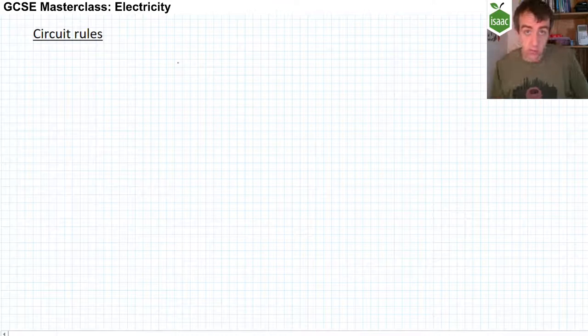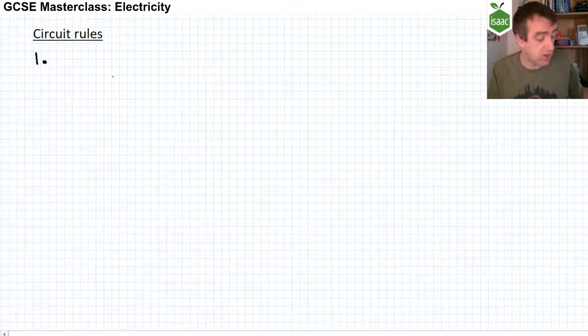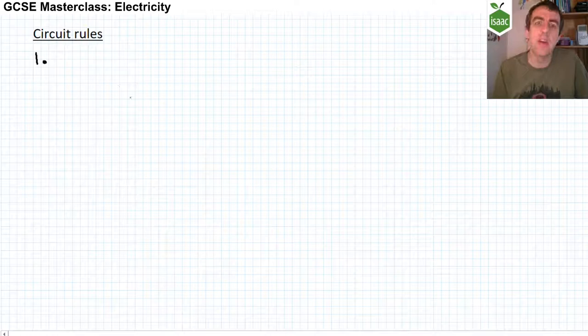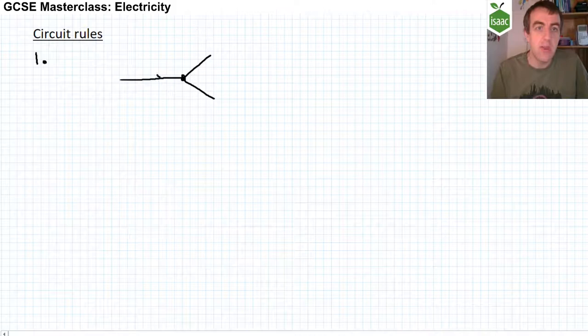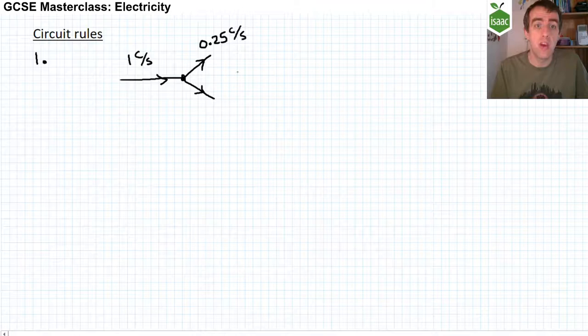There are two circuit rules for how current and potential difference behave in circuits. When you study A-level physics, you will learn these as Kirchhoff's laws. The first circuit rule is what current does in a circuit, and it stems from the idea that charge is always conserved. Because charge is always conserved and never vanishes within a circuit, current must also be conserved. So if a wire leads to a junction and two wires come out of it, every coulomb of charge that enters must also leave. If one coulomb per second enters, and 0.25 coulombs per second takes the top branch, then the bottom branch must carry 0.75 coulombs per second.